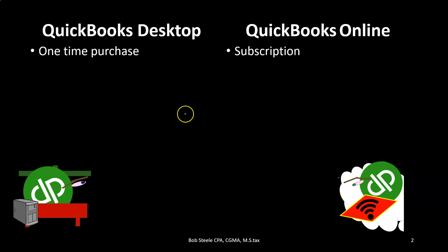Once you purchase the software, the desktop version is traditionally a one-time purchase while the online is a subscription — you pay monthly. The desktop requires a larger upfront lump sum, which is kind of painful, but once you have it on the computer you can use it for multiple years. QuickBooks updates the software each year, but depending on your needs, you can use the same software for multiple years without upgrading. On the online version you pay monthly or one yearly sum, but you must renew it each year.